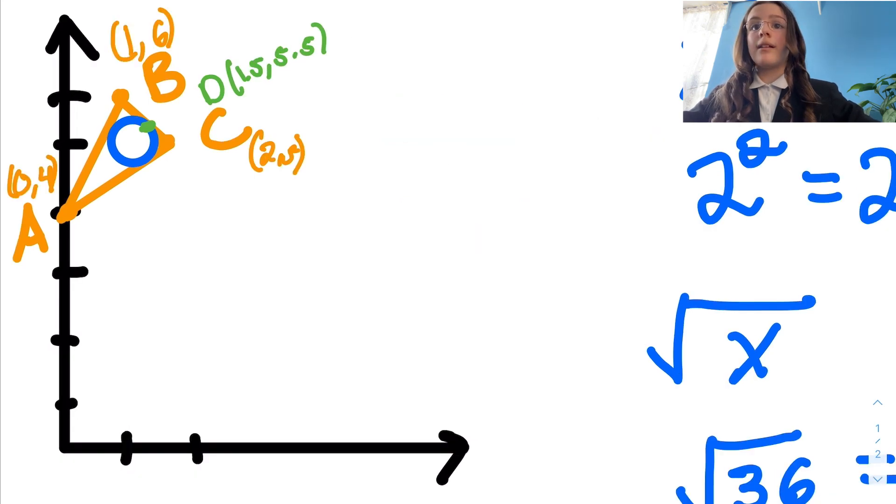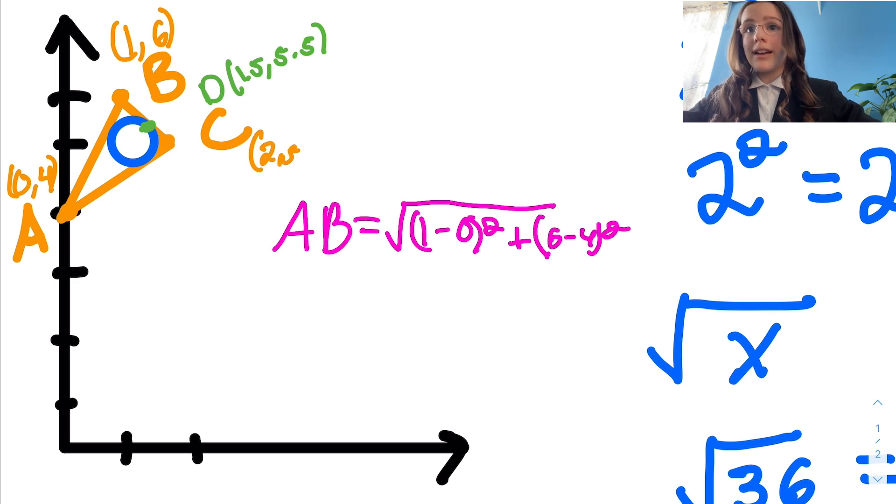First, side AB. Point A is (0,4) and point B is (1,6). When you plug the values into the equation, you get the distance of AB equals the square root of (1 minus 0) squared plus (6 minus 4) squared. After simplifying, you get the distance of line AC is the square root of 5.